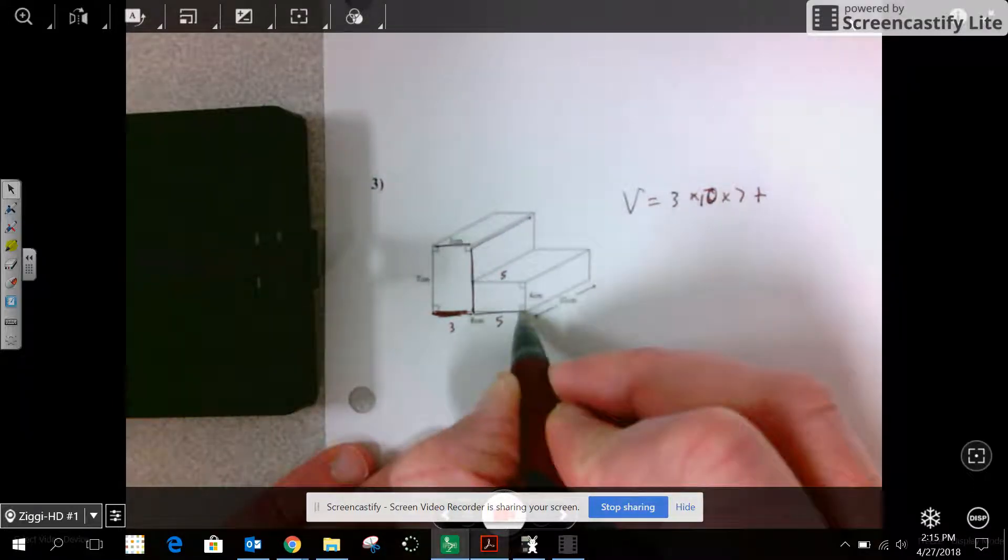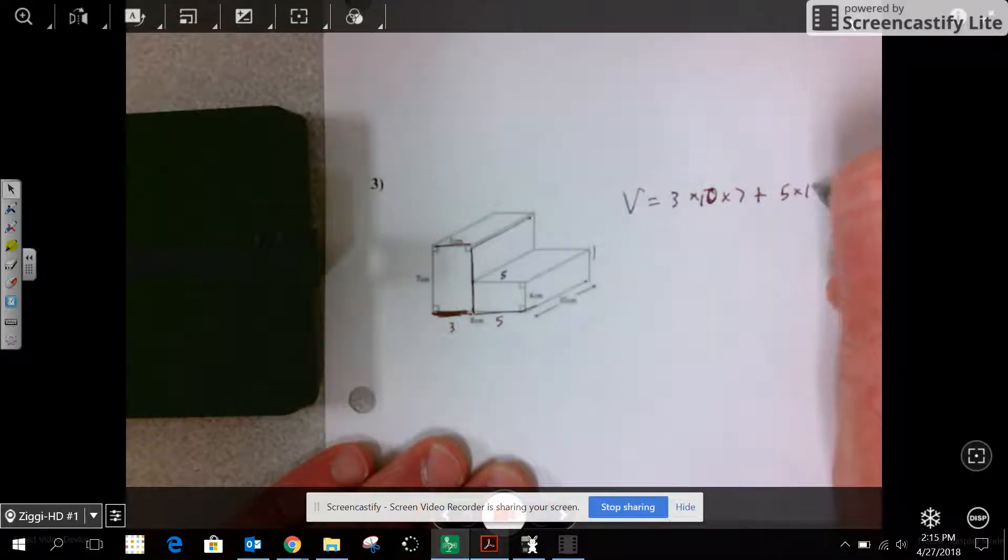Plus, this is 5 by 10 by 4. It's a lot easier with prisms. You're going to add those two together.